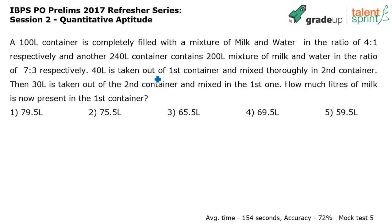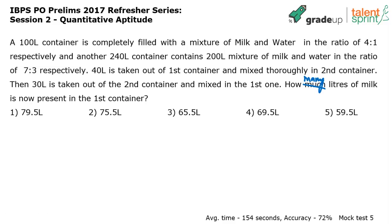40 liters is taken out of the first container and mixed thoroughly in the second container. Then 30 liters is taken out of the second container and mixed in the first one. How many liters of milk is now present in the first container?